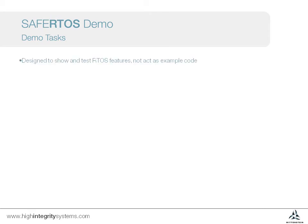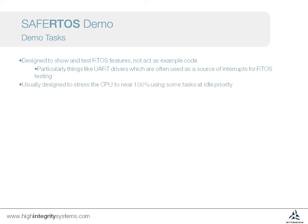Our demo structure uses a common format. This is designed to both exhibit the SafeRTOS API and feature set, while also providing a level of stress testing. Most demos will run a number of tasks at idle priority, meaning that CPU utilization is near 100%. As well as the functional tasks, each demo has a check task that monitors the system for any errors reported by the functional tasks. This will signal a heartbeat to an LED, or update an LCD display if one is available. This usually runs at a 5-second interval, unless an error is detected, when it will operate every 1 second.